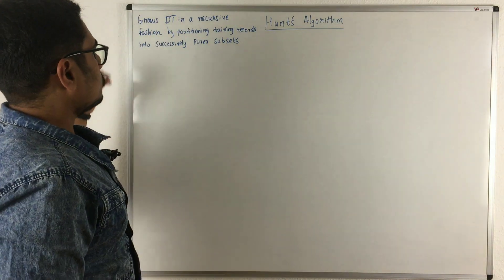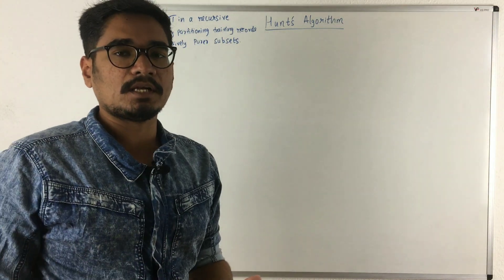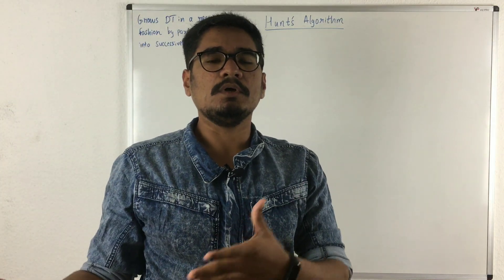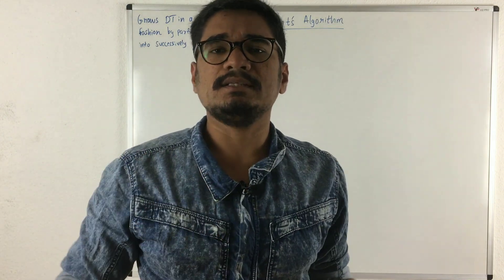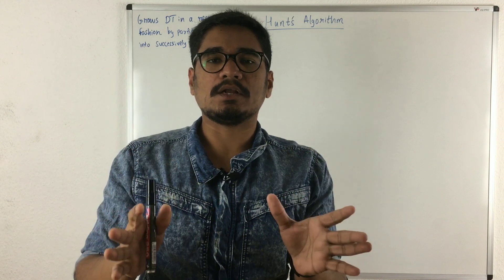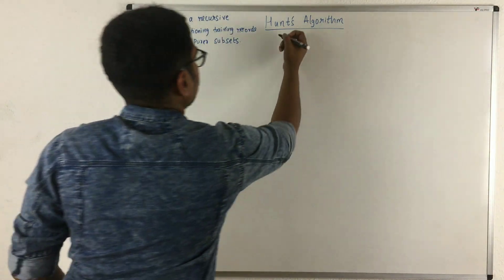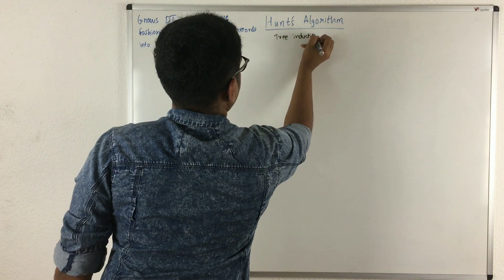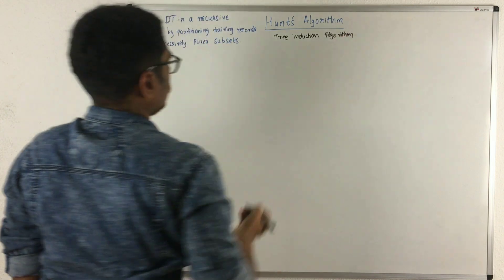Hunt's algorithm grows a decision tree in a recursive fashion by partitioning the training records into more and more purer subsets. Our dataset is divided into training set and test set — the majority of the portion goes into the training set and a smaller portion goes into the test set. With the training records, we induce Hunt's algorithm, which is essentially a decision tree induction algorithm.